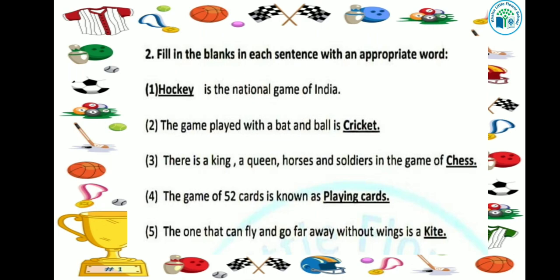Next question: there is a king, a queen, a horse and soldiers in the game of dash. Which game has a king, queen, horses, and soldiers? Yes, that game is chess - chess has a king, queen, horses, and soldiers. So our answer is chess.